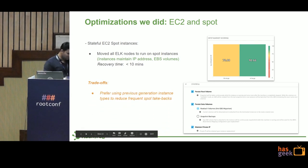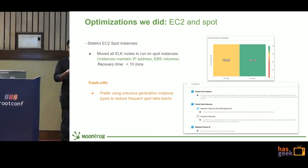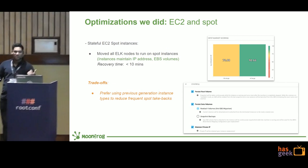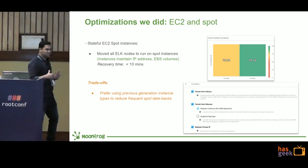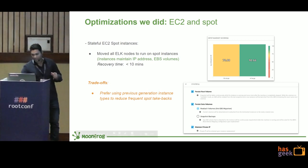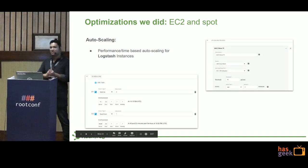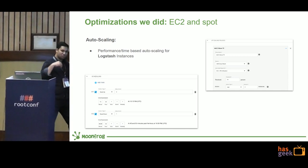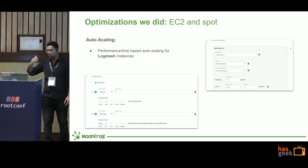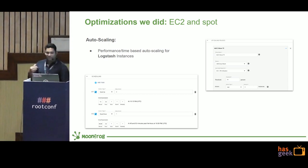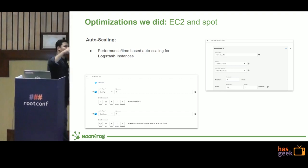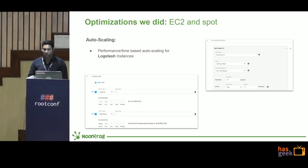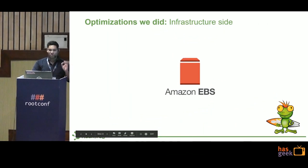There are trade-offs to using Spot: there is a possibility of Spot reclaim. To reduce reclaim frequency, we moved to previous-generation instances. We also implemented auto-scaling for Logstash — scaling based on performance (if CPU goes beyond 80%, launch two nodes; below 40%, remove two nodes) and time-based auto-scaling where we scale up or down based on predicted load patterns. Auto-scaling is only implemented for Logstash.